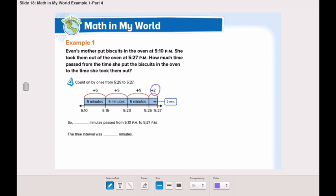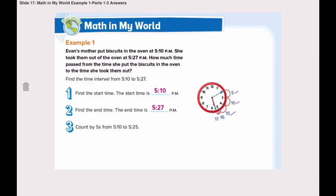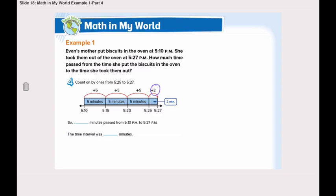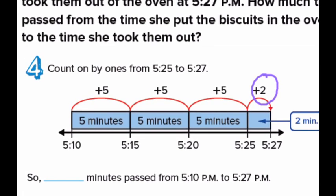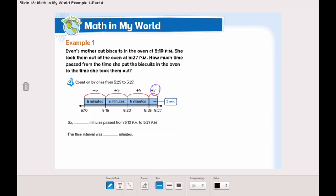Let's add all the minutes that we counted together. We can show it on the number line. From 5:10 to 5:15, that's 5 minutes. Plus, 5:15 to 5:20, that's another 5 minutes. Then, from 5:20 to 5:25, that's a third 5 minutes. Then, from 5:25 to 5:27, that's 2 minutes. We need to add them all together to find the total minutes. We have 5 plus 5 plus 5 plus 2.